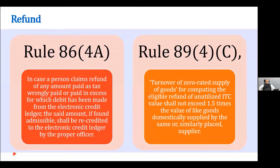Rule 86.4A provides that a person claiming refund of any amount paid as tax wrongly can have it re-credited in the electronic credit ledger. This amendment should have come long back. For example, if someone, due to a typing mistake, debits 500 crores instead of 50 crores, they later find 450 crores paid in excess and need to take it back. Previously the system was designed such that you couldn't credit those 450 crores back and had to claim a refund instead. Now, they have introduced a provision allowing the officer to re-credit the amount — a welcome feature.